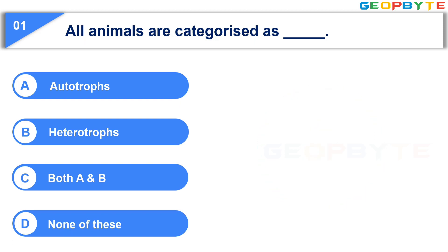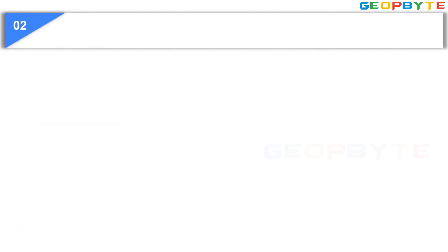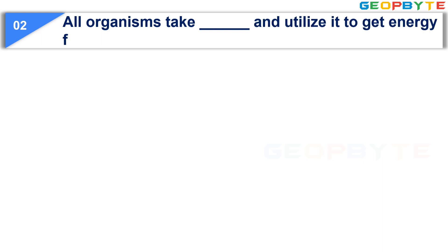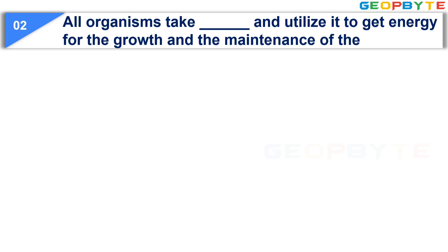Your time is up and the correct answer is Option B, Heterotropes. Moving to the second question: All organisms take dash and utilize it to get energy for the growth and the maintenance of their bodies.